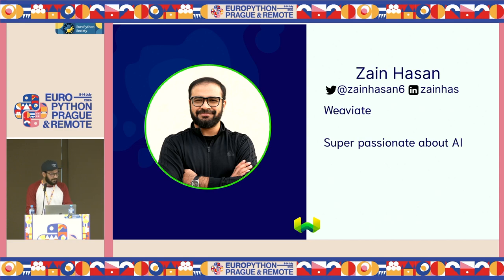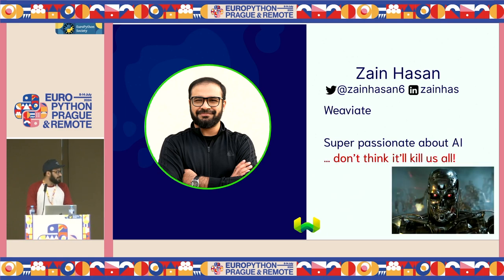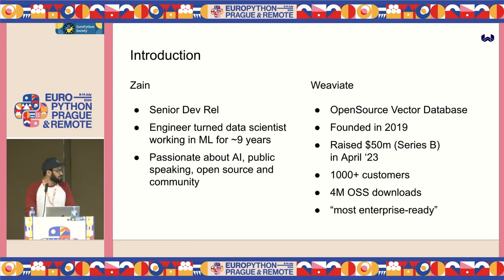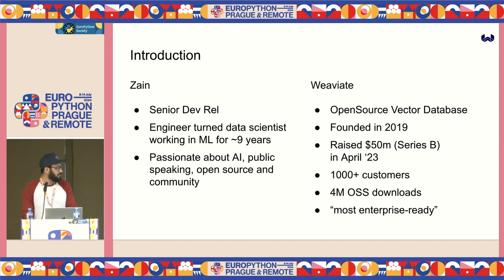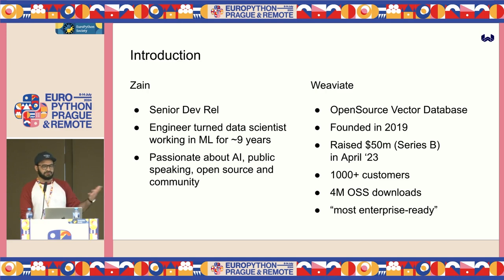My name is Zan Hasan. I work at Weaviate. I'm really passionate about AI and the good that it can do for humanity. I'm a trained engineer and I've been working in machine learning for a while. Weaviate is an open source vector database that can essentially help you build the hybrid search technologies that the last speakers were talking about, in addition to scaling it up.